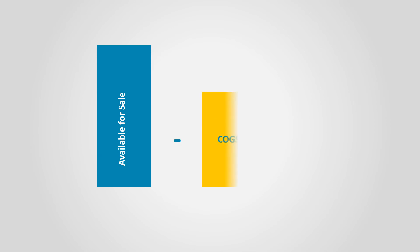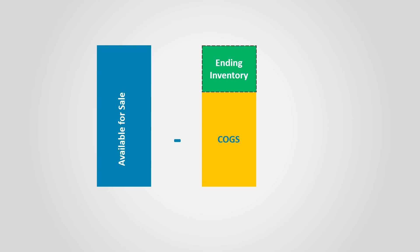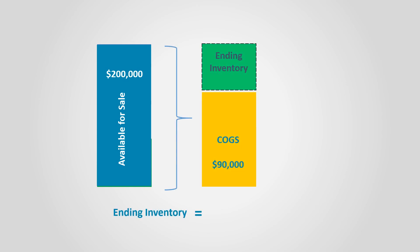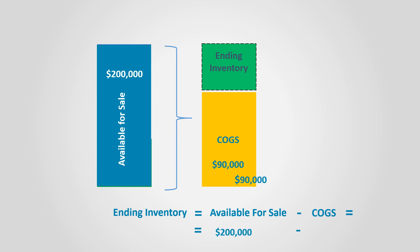Recall the relationship between goods available for sale, cost of goods sold, and ending inventory — knowing any two variables, the third could be calculated. In our case, the ending inventory is unknown, so it is calculated by subtracting the estimated cost of goods sold from the goods available for sale. The goods available for sale is $200,000, and the estimated cost of goods sold of $90,000 is subtracted to get an estimated ending inventory of $110,000.